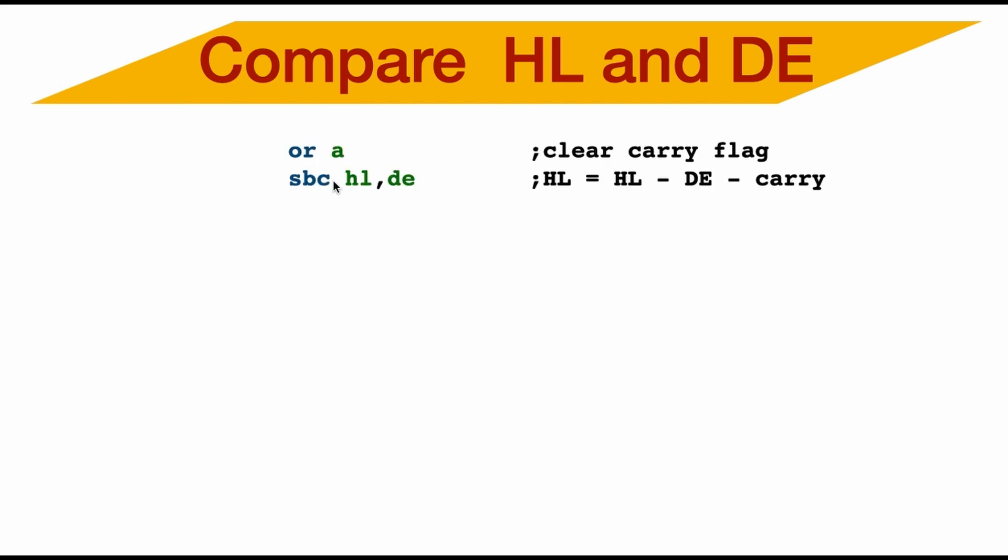First, I'll clear the carry flag and then use SBC HL to DE. And what this does is take DE from HL minus the carry, but it does modify HL. Sometimes you don't want that. So simply just adding an add HL to DE will fix the HL register to what it was before.